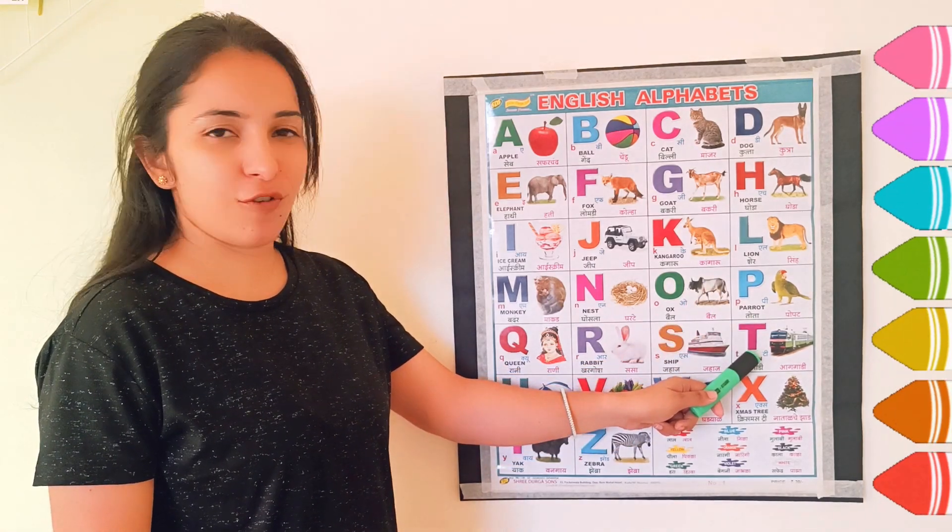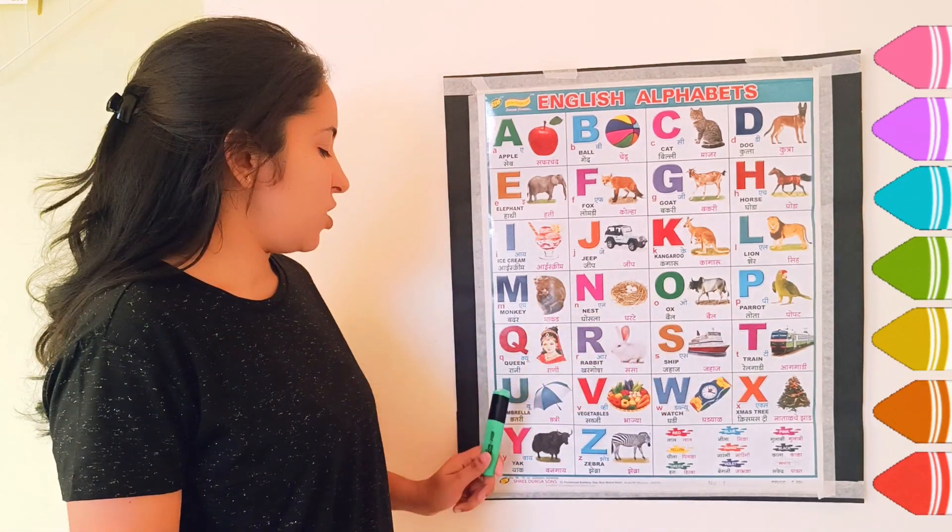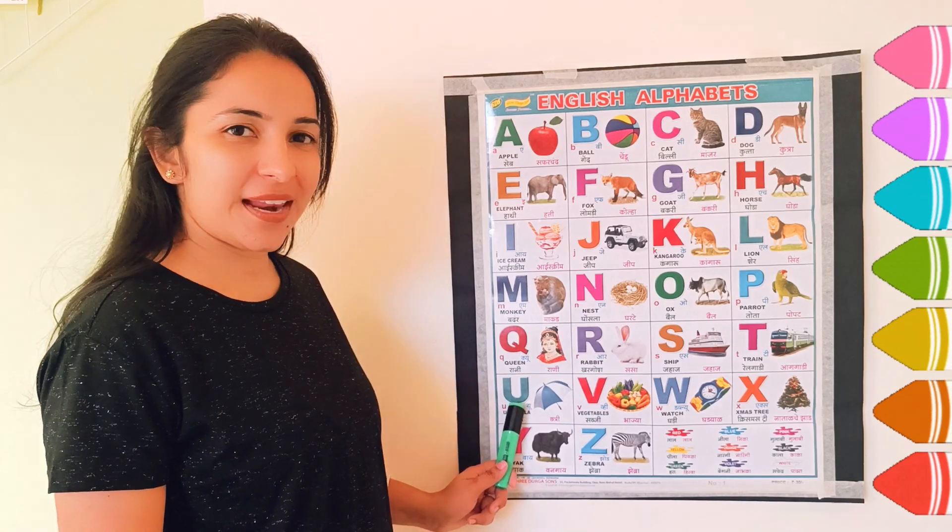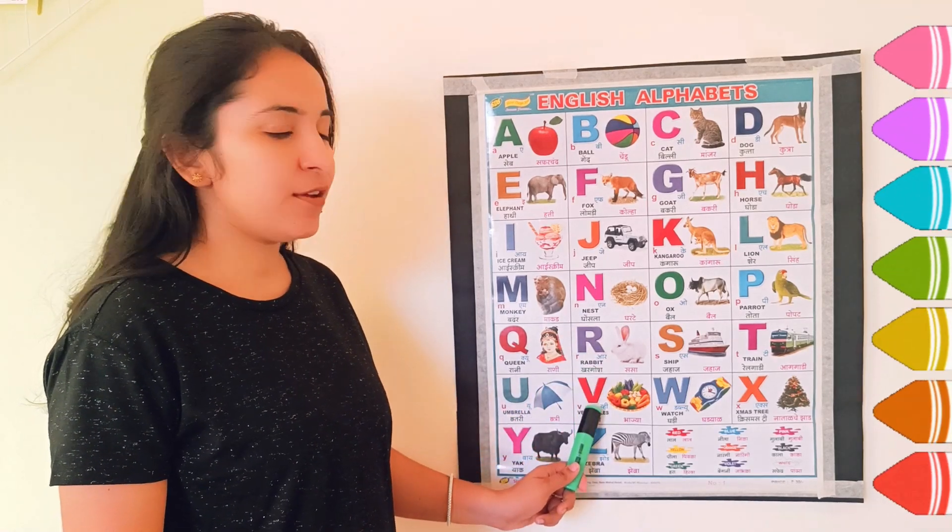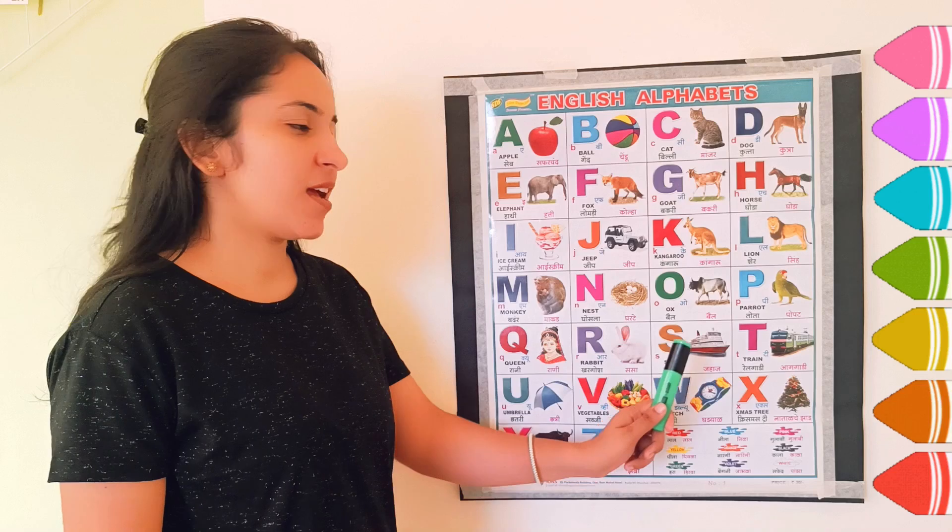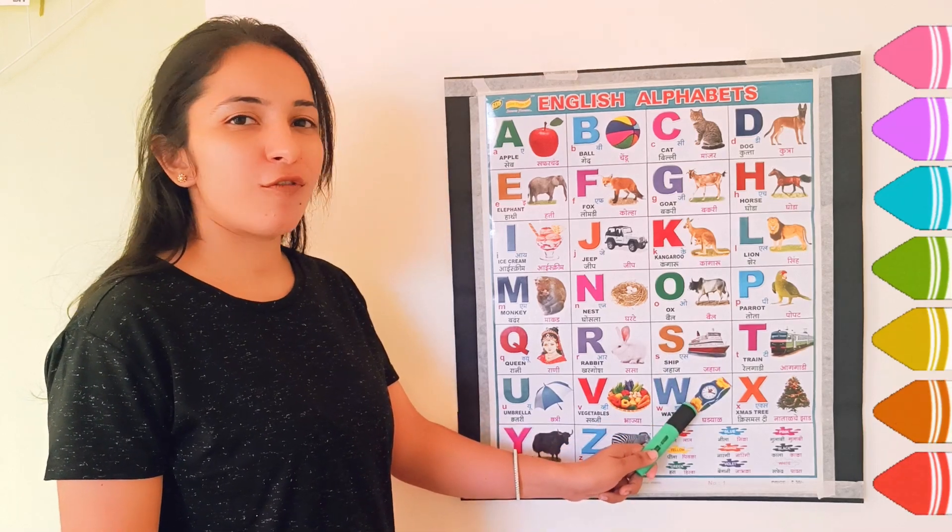T, T for train. U, U for umbrella. V, V for vegetables. W, W for watch.